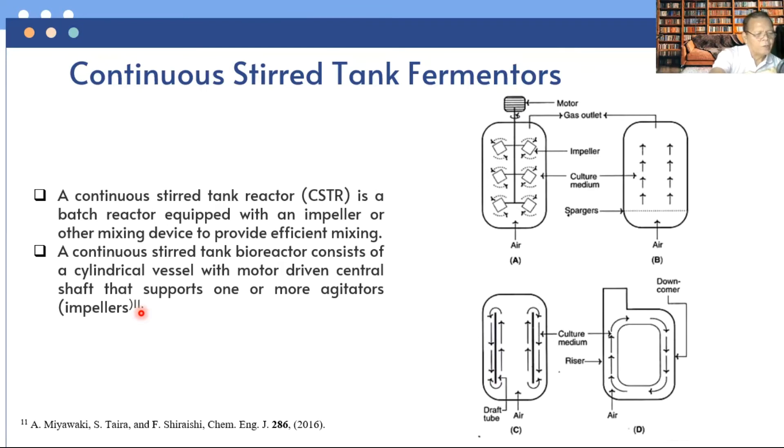In a stirred tank bioreactor, air is added to the culture medium under pressure through a device called sparger. The sparger may be a ring with many holes or a tube with a single orifice. The sparger, along with impeller or agitator, enables better gas distribution system throughout the vessel. Figure A is presented in the continuous stirred tank bioreactor.